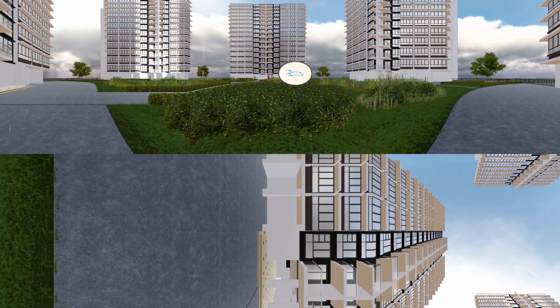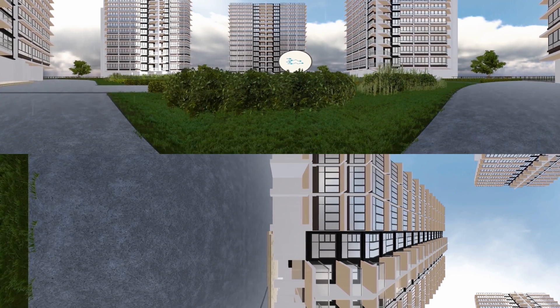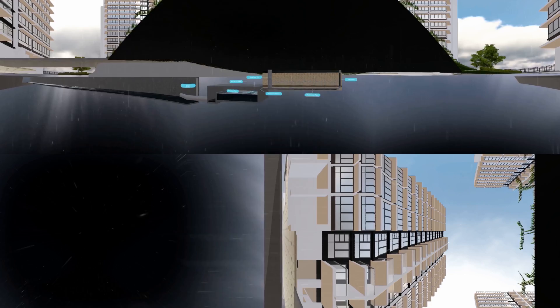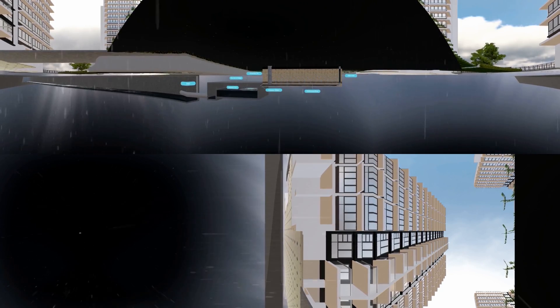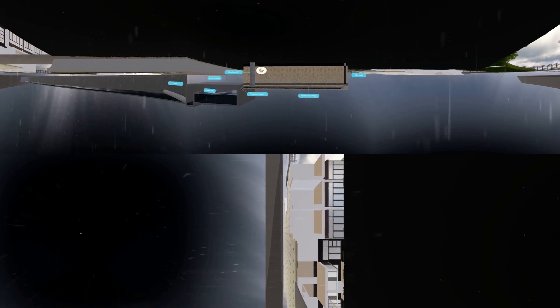Firstly, rainfall runoff can be detained in an ABC Waters Design Feature before it is released into the drains, to slow down the flow. This reduces the risk of flooding.